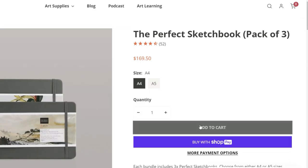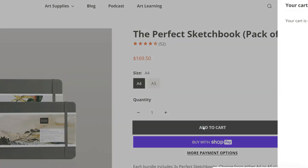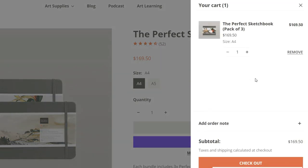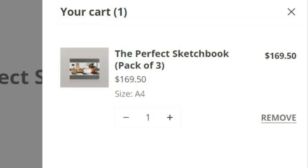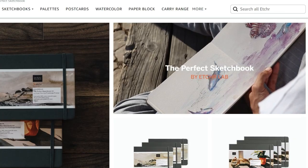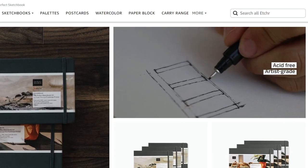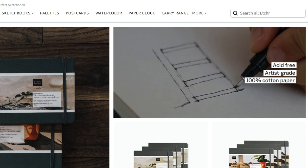And price-wise, it's hard to buy it alone which is the only thing I wish was different really. Because I see right now it's a bundle of three and the three of this A4 sketchbook are currently priced on Etch's website for $169.50 and on Amazon you can get the same bundle for $156.95.